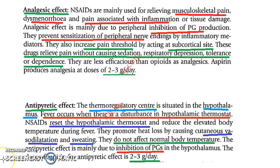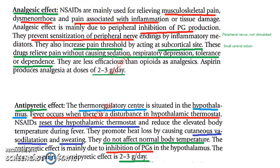At 2 to 3 grams per day you get an analgesic and antipyretic effect. The analgesic effect is for minor pains only — not for major trauma like a road traffic accident — but for dysmenorrhea, pain associated with inflammation, and musculoskeletal pain. NSAIDs work mainly through a peripheral action: prostaglandins are inhibited, preventing sensitization of peripheral nerves, so no pain sensation for normal pain.